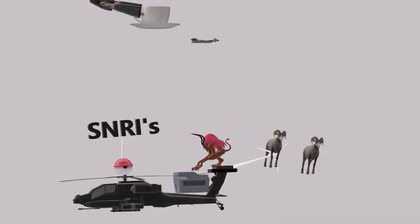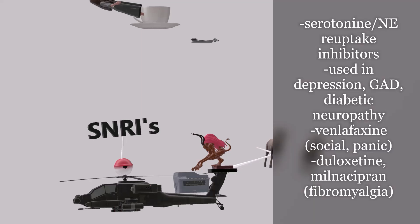How do these drugs work? As their name suggests, they are both serotonin and norepinephrine reuptake inhibitors — they act on both serotonin and norepinephrine transporters on the presynaptic neuron and inhibit them, increasing levels of both neurotransmitters. Thus they are used in treatment of depression. Other conditions include generalized anxiety disorder, diabetic neuropathy, and venlafaxine is also indicated for social anxiety disorder and panic disorder.